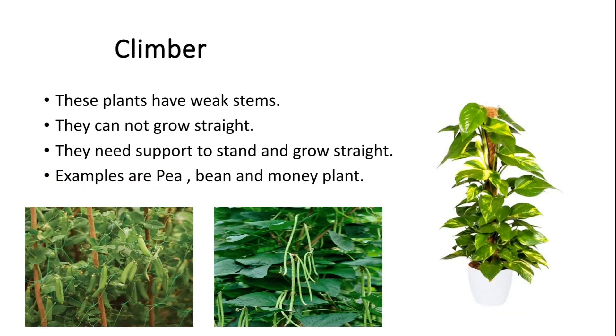Climbers: these plants have a weak stem. They cannot grow straight. They need support to stand and grow straight. Examples are pea, bean and money plant.